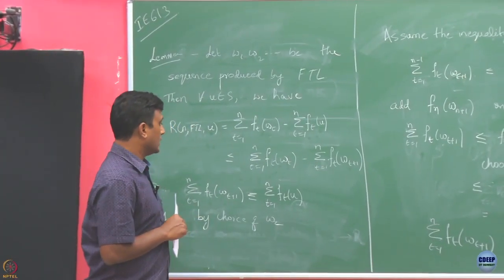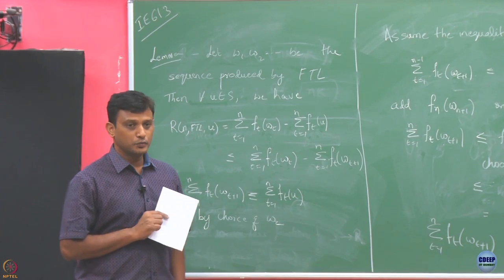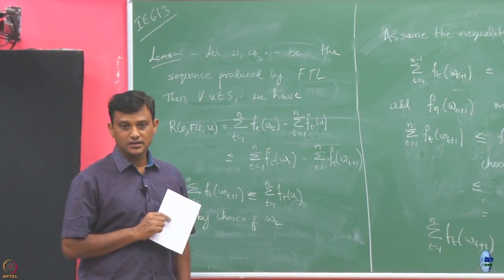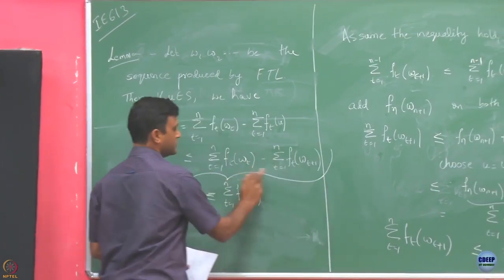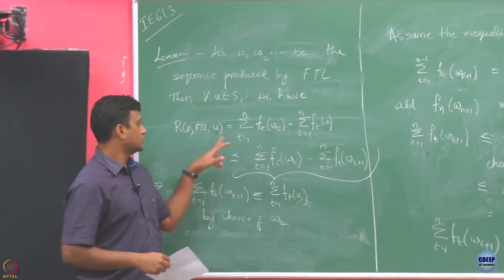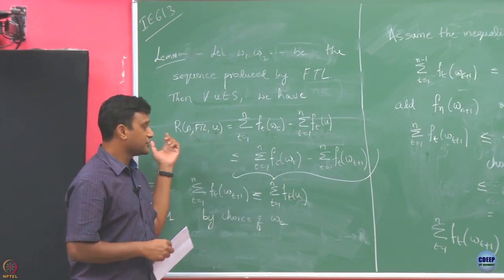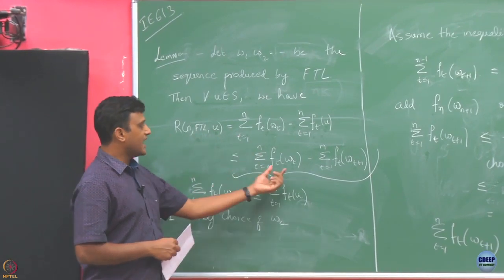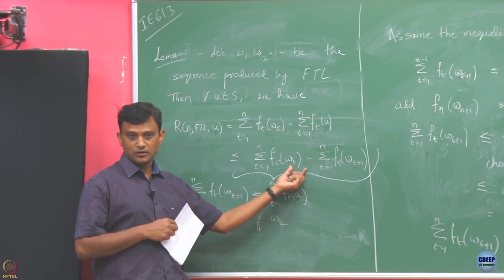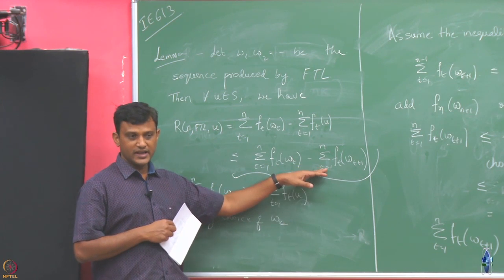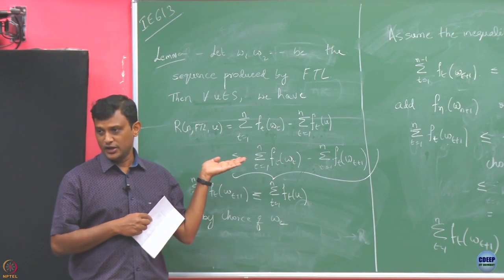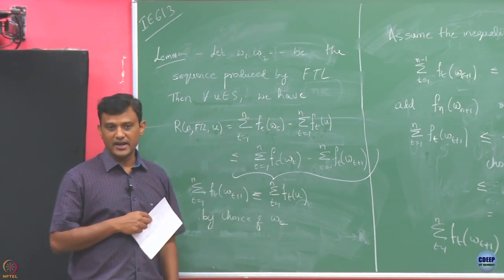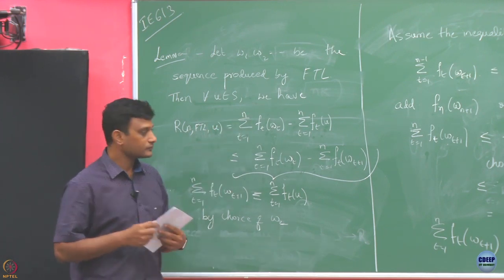Then all we need to prove any regret bounds is to worry about this upper bound. If we can give an upper bound on this quantity, we have an upper bound on the regret. Now this quantity is no longer specific to U — if I can bound this quantity, it will be a regret bound that holds for every U. That is what my regret definition was.